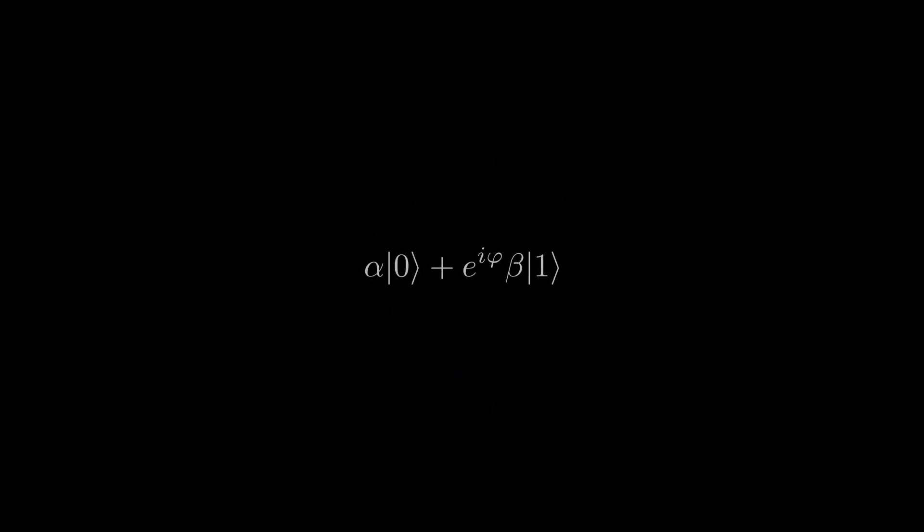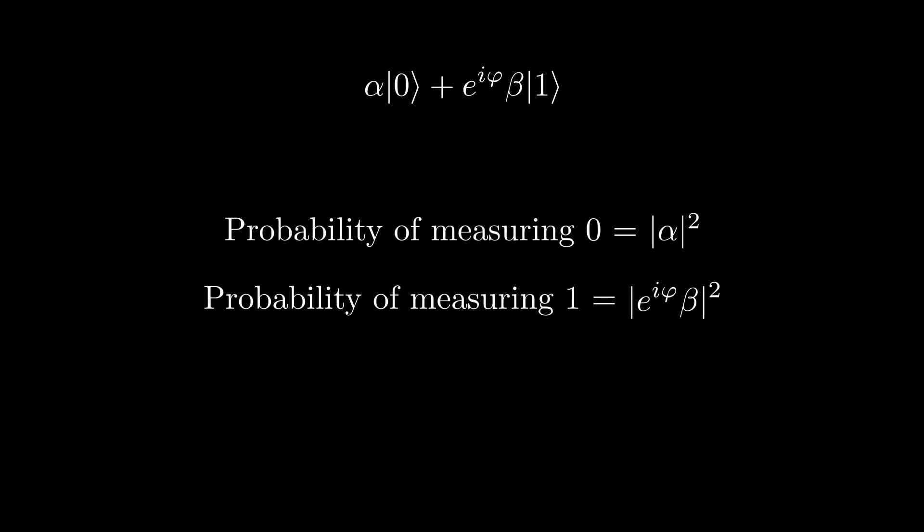If we look at an arbitrary qubit state, α|0⟩ + e^(iφ)β|1⟩, the probability of measuring a 1 is |e^(iφ)β|². We can split the absolute values up like this. The magnitude of e^(iφ) is 1, since the coefficient of the complex number in exponential form states its magnitude. So the probability of measuring 1 is still |β|².